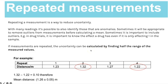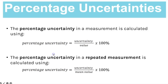I've seen that come up a couple of times in the exam, and each time they've given the statement that uncertainty can be calculated by finding half the range of the measured values. That leads me to assume they would do it again if it came up. It's worthwhile knowing and helpful to have an awareness of it in the exam.